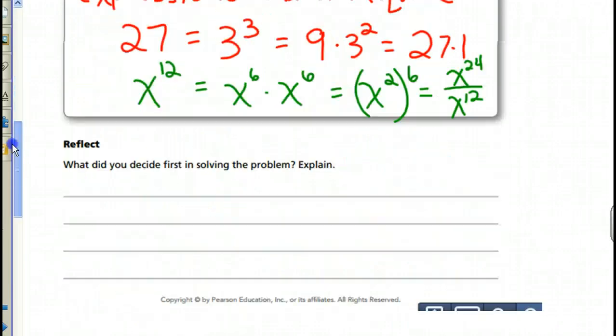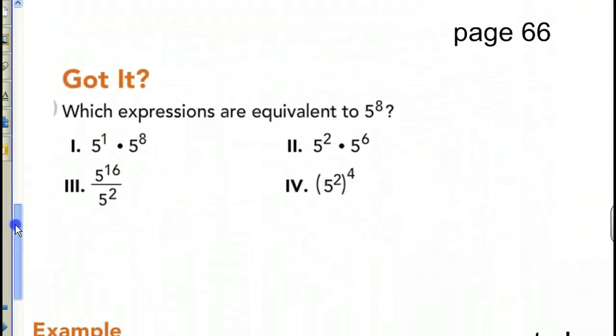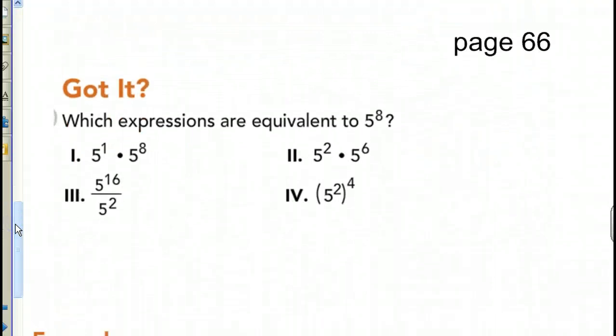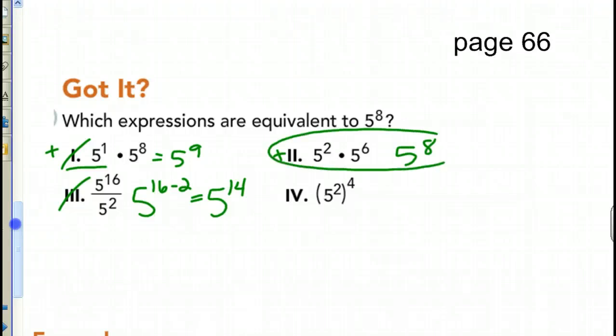All right, let's go to the first Got it. Page 66. Which expressions are equivalent to 5 to the 8th? Well, this one here, we add our exponents. So, that equals 5 to the 9th. So, that's not. This one here, we subtract. So, 5 to the 16th minus 2 gives me 5 to the 14th. That one's not. This one here, we add our exponents again. So, we're going to get 5 to the 8th. This one is equivalent.